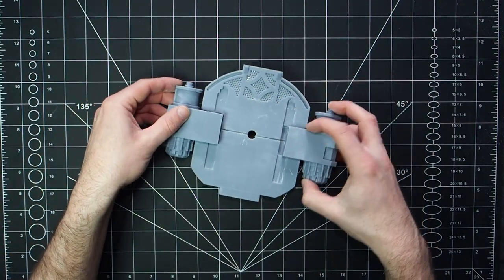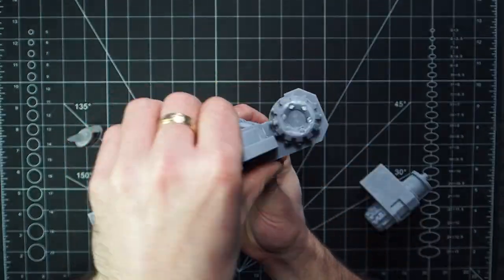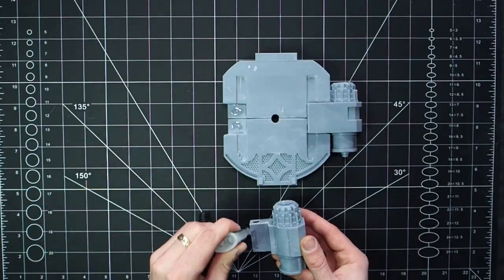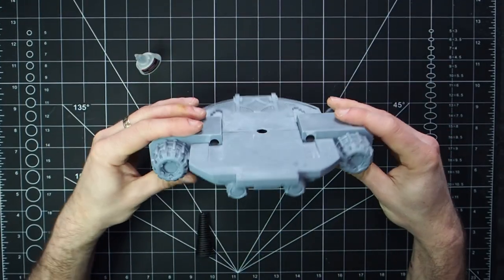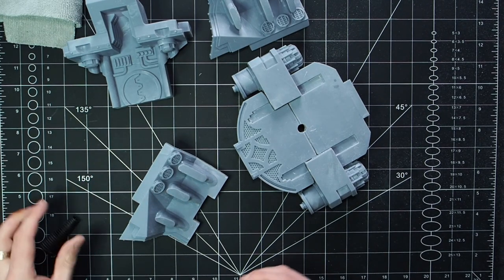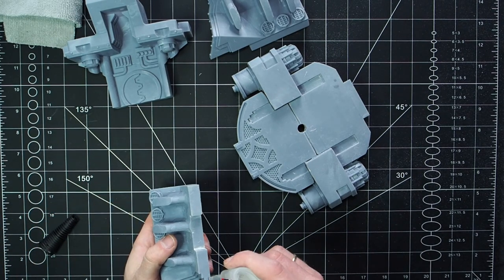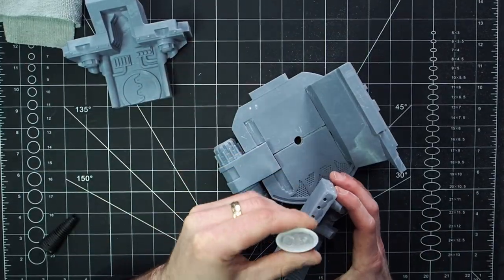Next to do was to glue in these side pieces. These are going to really help strengthen the bond between the two halves because they cover the two sections each. So with a bit of superglue and a firm hold that was done.